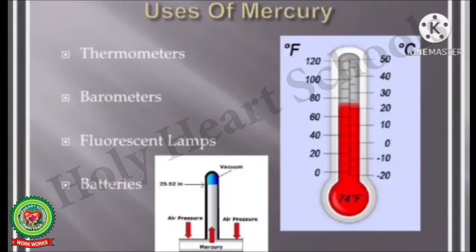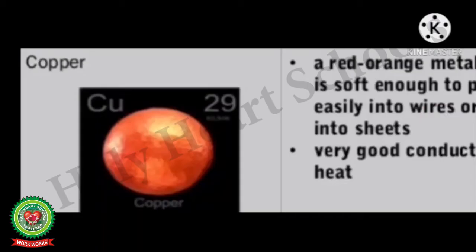Mercury: Mercury is a liquid metal and expands a lot on heating. It is used in making thermometers, barometers and other scientific apparatus. It is also used in fluorescent lamps and batteries.